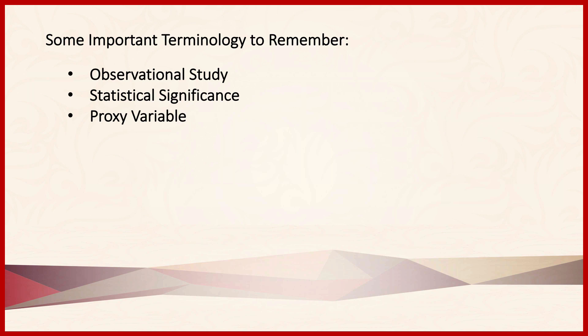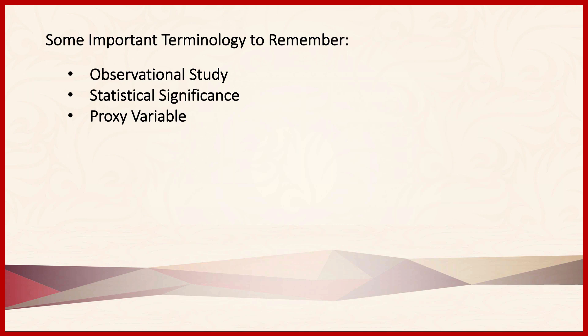Finally, we have the notion of a proxy variable. Sometimes we want to talk about whether certain independent variables bring about an effect like increased health, but health is pretty abstract. So we pick some other variable that stands in for health — for example, lower blood pressure, lower cholesterol level, or perhaps longevity. In these cases, lower blood pressure and lower cholesterol level are proxies for good health. As you become more familiar with Mill's methods, you'll discover that most scientific studies involve the statistical use of the methods, which is why it's important that we be able to recognize them and their application.